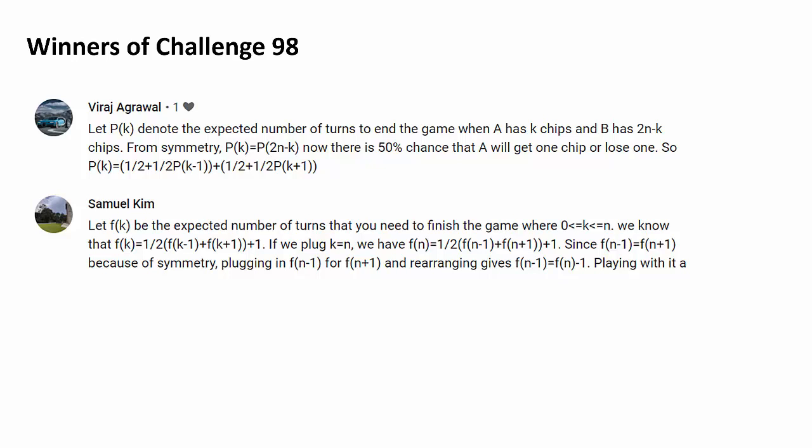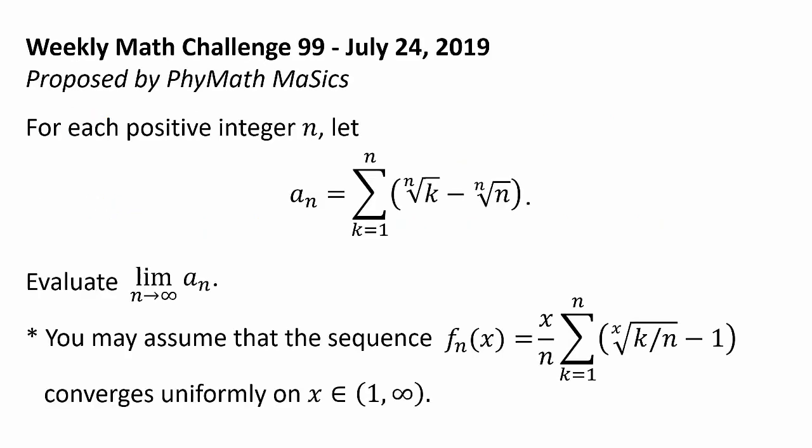A huge shoutout to every single winner. Here is the 99th challenge proposed by PhiMathMaSics. For each positive integer n, let a sub n be the sum from k equals 1 to n of nth root of k minus nth root of n. Evaluate the limit as n goes to infinity of a sub n.